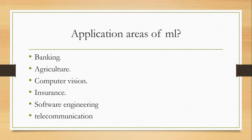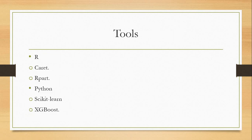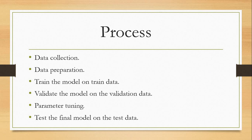Machine learning is applied across a wide range of industries, including banking, agriculture, computer vision (which is part of deep learning), insurance, software engineering, telecommunications, and healthcare. It's applied in virtually all industries. The tools we're going to use are R and Python programming languages, along with packages such as caret, rpart, XGBoost, neural networks, and many others. All algorithms will be implemented in both R and Python.